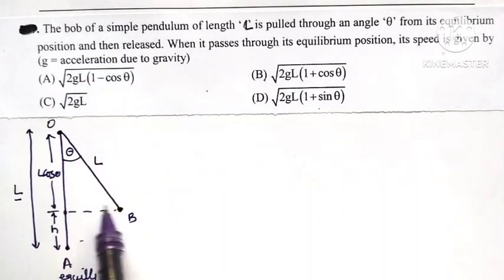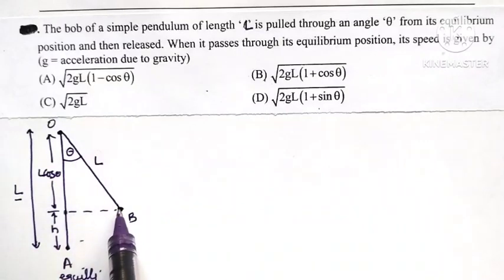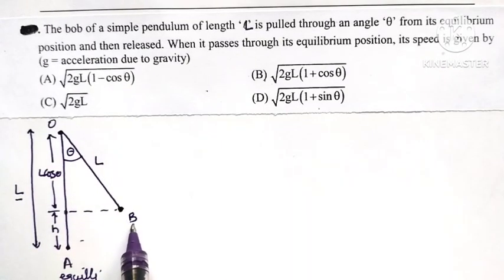When the bob is pulled through angle theta, it is at extreme position B.